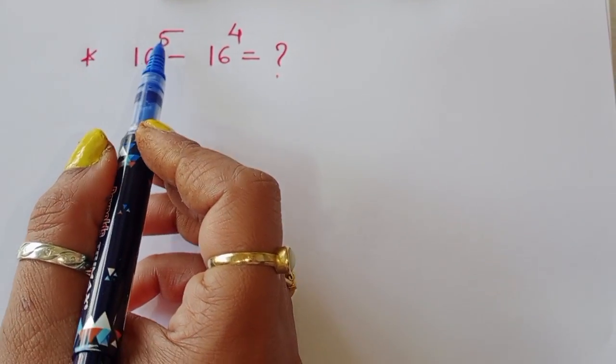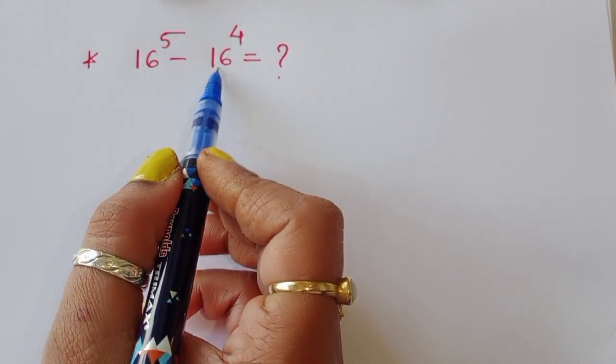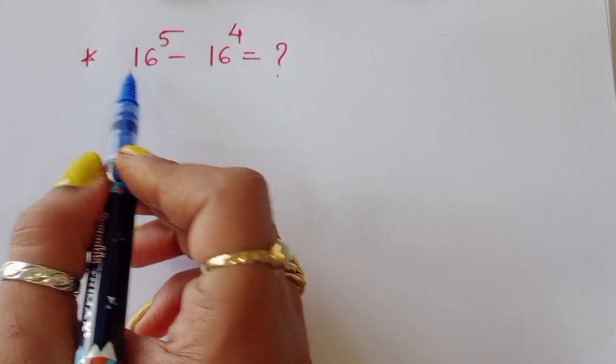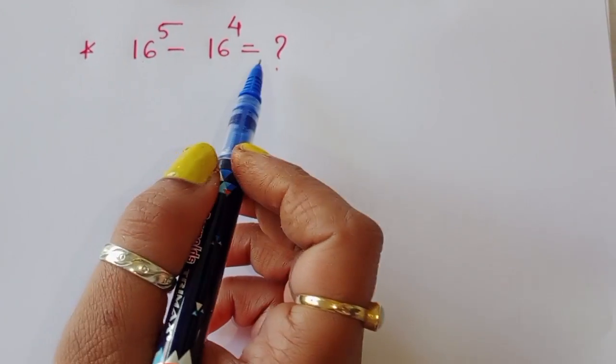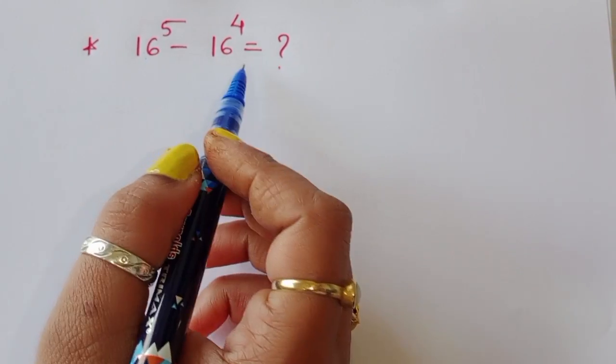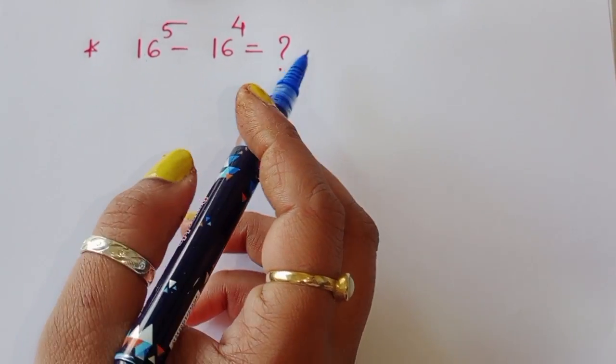The question is: 16 power 5 minus 16 power 4 is equal to what? We have to find out the value of this term. Let's see the solution.